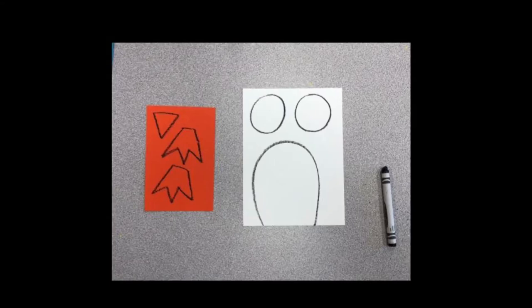On the orange paper I used a black crayon to draw a nice large triangle for his beak and then two webbed feet. Remember to draw as big as you can. Then I drew on the white piece of paper a body shape again and two nice large circles.